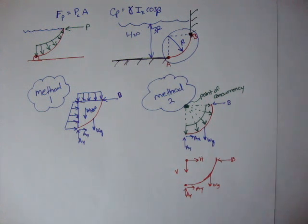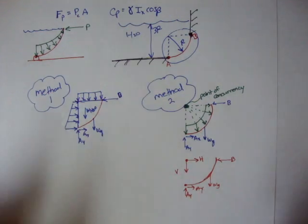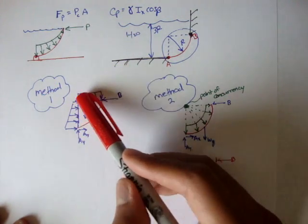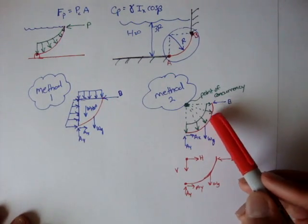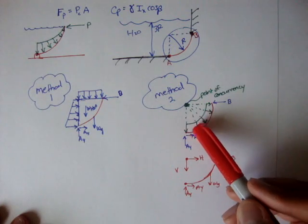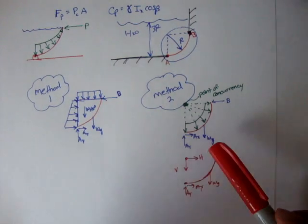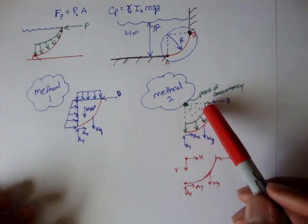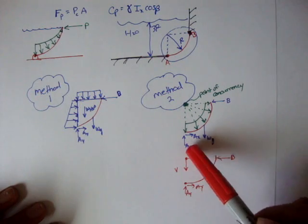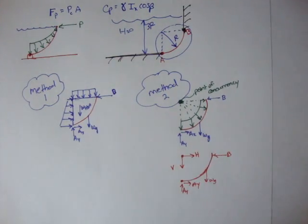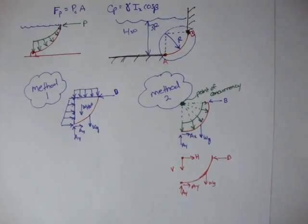In summary, we have two methods. Method 1 is to take the gate plus a simple chunk of water and draw a free body diagram, using our flat-surface equations to calculate forces. Method 2 is to look at the gate itself, analyze the pressure distribution from the fluid acting on the curved surface, replace it with resultant forces H and V at the point of concurrency, bring those back to the gate's free body diagram, and solve for whatever is needed. We'll explore Method 2 further in the next video.